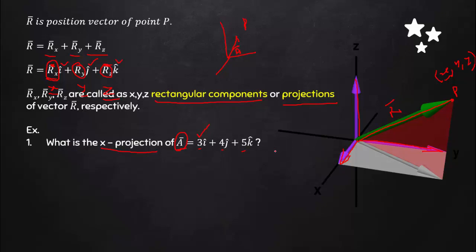For a numerical example: if A-bar = 3î + 4k̂, there is no j-component, so the y-component of A-bar is 0.